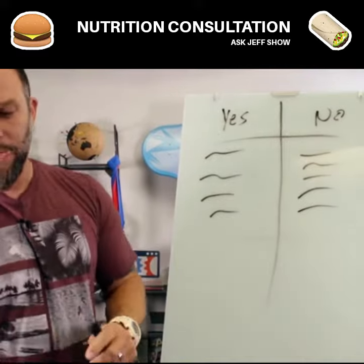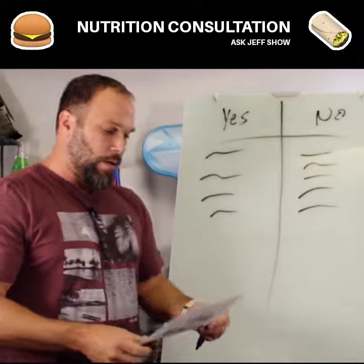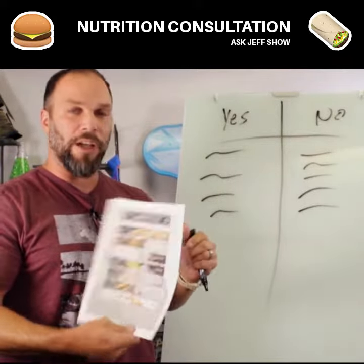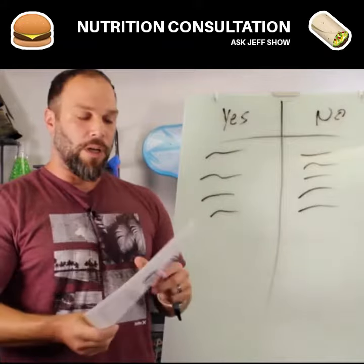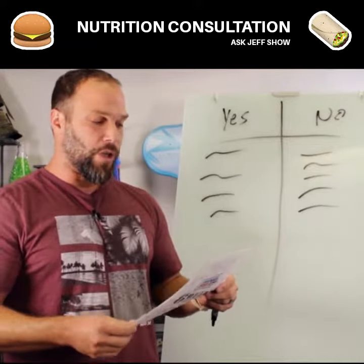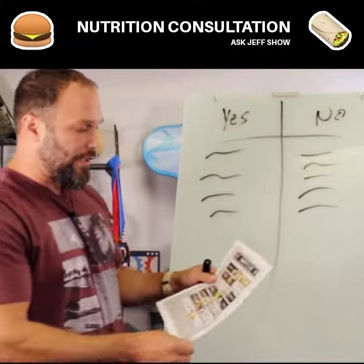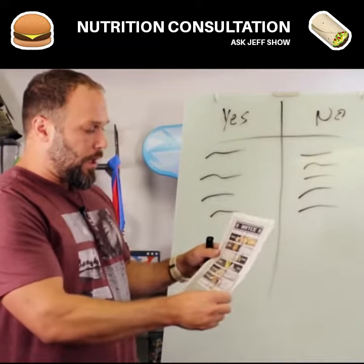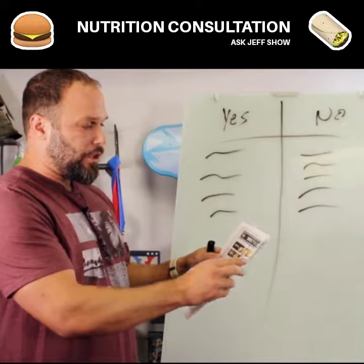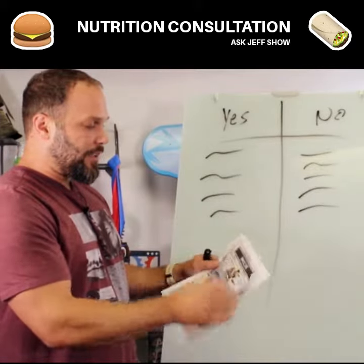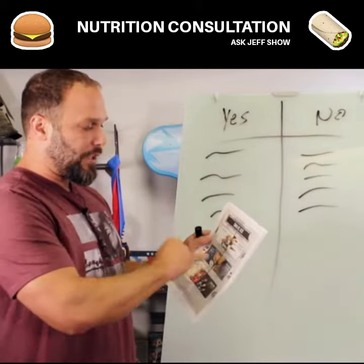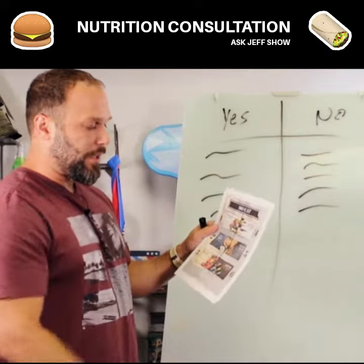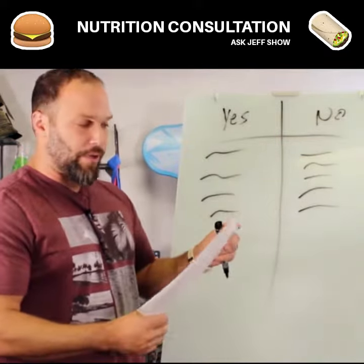We put together a PDF that I use, and we're going to give this to you guys in a Word document so you can edit it, customize it, make it your own, and give it to your clients if you want to follow this structure. On the don't eat side we have bread, cheese, pasta, milk, rice, and yogurt, and we tell them why they shouldn't eat those things. On the do eat side it's veggies, lean meats, fruits, beans and legumes, nuts and seeds, and liquids like water, coffee, or tea.